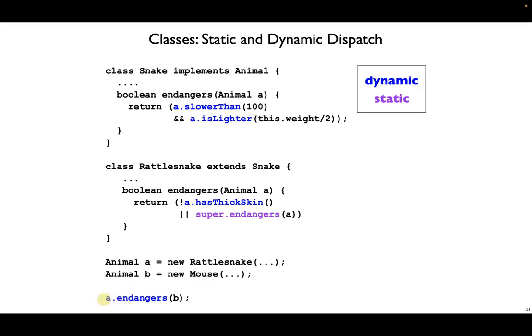First, A dot endangers, this call has to be a dynamic lookup. And that's why it's written in blue. Statically, our language knows that A is an animal. It does not know that A is a rattlesnake, because we have the type animal up here. So we have to have a dynamic lookup to realize that the object that A is bound to is a rattlesnake. And so we jump up to this endangers method.